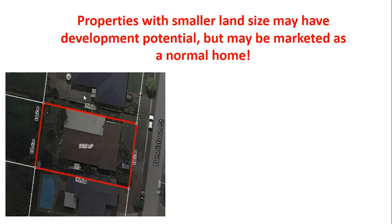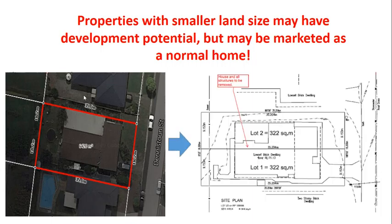Let's look at this property for example. This property is sitting on a land that is only 642 square meters, but it can actually be split into two lots around 322 square meters each, like this. And this particular subdivision has recently been approved by council.